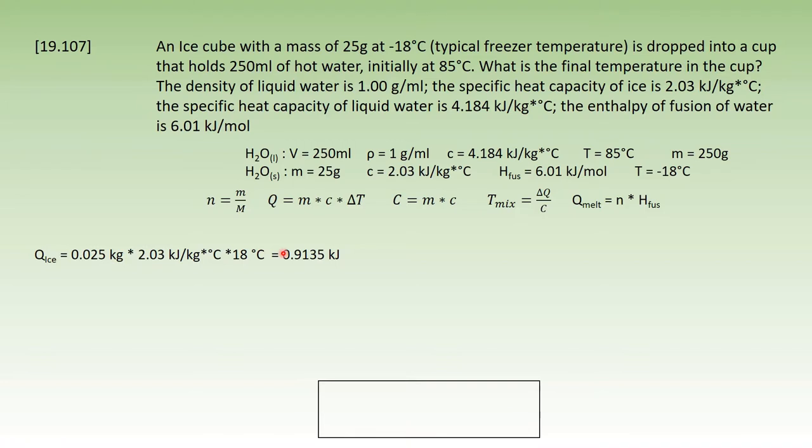Now we calculate the energy needed to melt the ice, for which we use formulae 1 and 5. Since the molar enthalpy of fusion is given, the amount of substance of ice needs to be calculated. We multiply 1.39 mol with the enthalpy of fusion of water, and to melt the ice, about 8.35 kilojoules is needed.